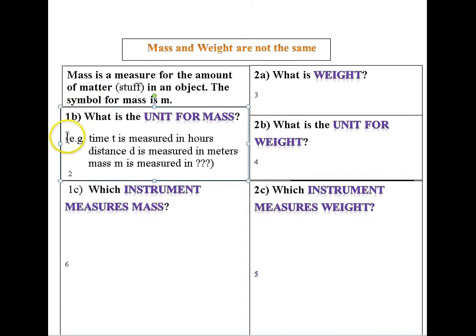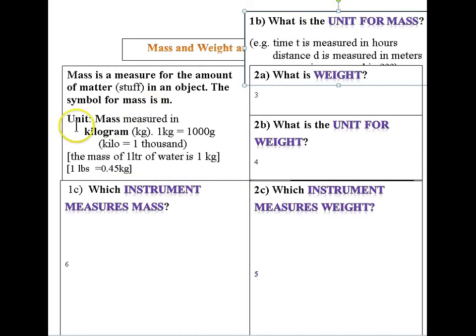Like time is measured in hours, distance d is measured in meters, mass m is measured in kilogram. One kilogram is one thousand grams. Kilo means one thousand.